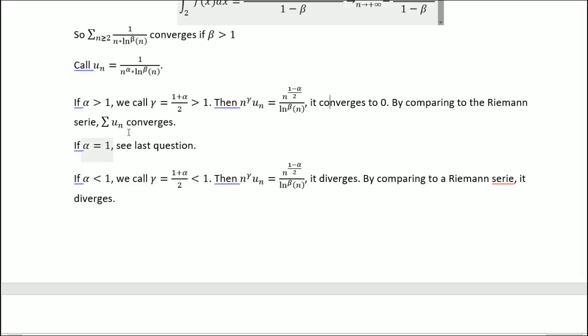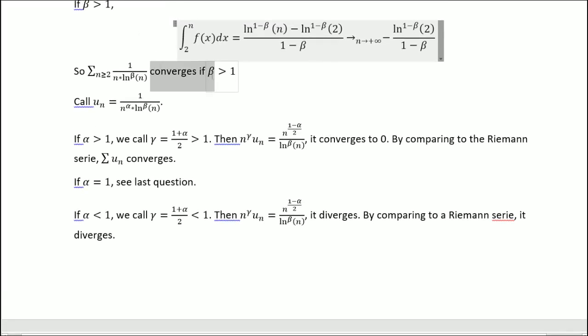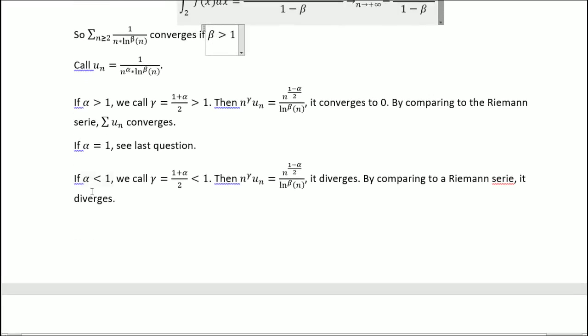If alpha equals 1, we get the same thing as the last question, so it depends on beta. And if alpha is inferior to 1, if we do that, we get something inferior to 1. And when we do n to the power of gamma u_n, it diverges by comparing to a Riemann series, because the exponent of n is inferior to 1, and by the work of Riemann, it diverges.